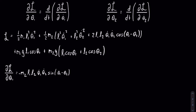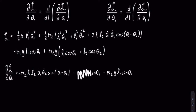The next time theta1 shows up is in the third term of the Lagrangian. Since there's a cosine, there will be a negative in front, giving negative m1 g l1 times sine of theta1. The last occurrence of theta1 is in the final term; when multiplied out you get m2 g l1 cosine of theta1, so after taking the derivative you get negative m2 g l1 sine of theta1. From there, you can factor out negative g l1 sine of theta1, leaving m1 plus m2 in parentheses. I'll erase all of this and replace it with the factored form.